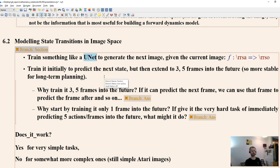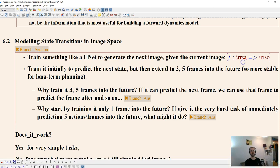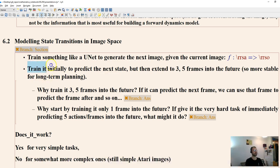So you can use something like a UNet here to generate the next image. Given the current image. So what they do is they train it to initially predict the next state given the current action. And so why do they do this? First they predict the next state, but then after it can predict the next state fairly well, then they train it to predict three frames and five frames into the future, so that it becomes better at longer-range planning.